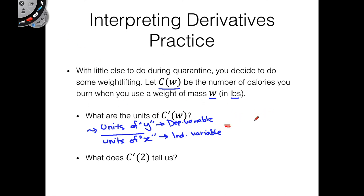So in this case, it's going to be units of C over units of W, which is just going to be calories per pound. Fantastic, calories per pound.